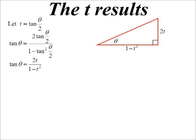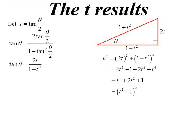Now what I'll do is I'll draw up a triangle, so opposite is two T, adjacent is one minus T squared, bit of Pythagoras, and we should be able to work out the hypotenuse eventually. Yeah, that's a perfect square. So the hypotenuse would be one plus T squared.